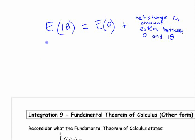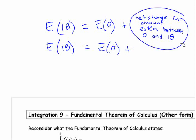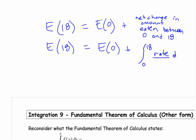If you want to use integrals for this, you say the amount at 18 is the amount at 0, plus the net change in the amount eaten between those two is the integral from 0 to 18 of the rate with respect to whatever you're using, your time, I guess, right? Or, in other words, it's the integral from 0 to 18 of R of T, DT.